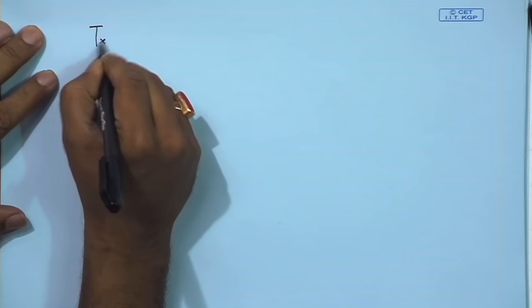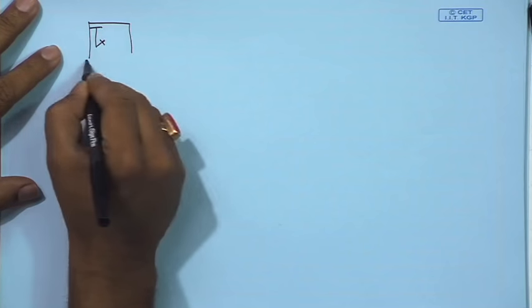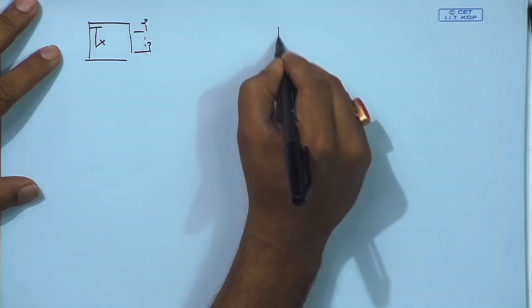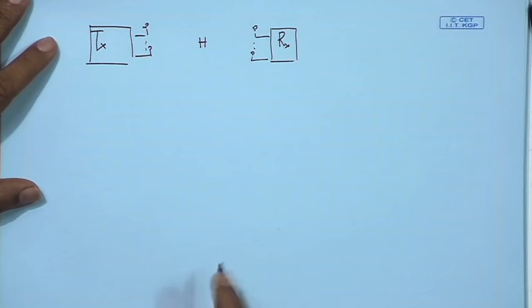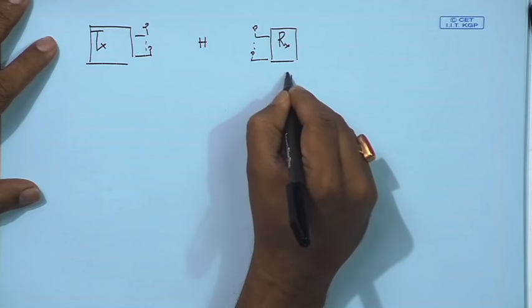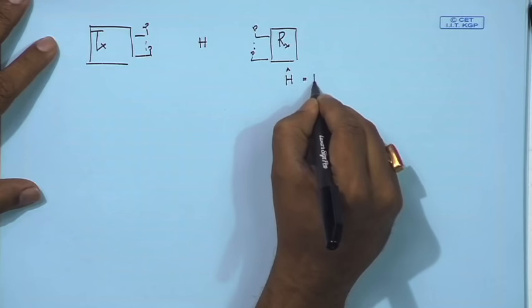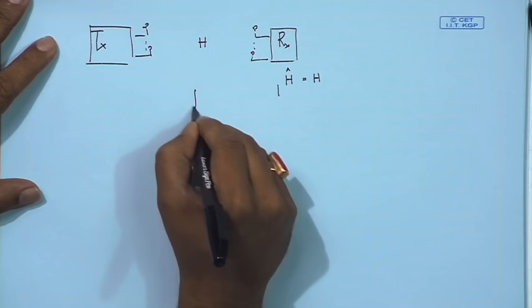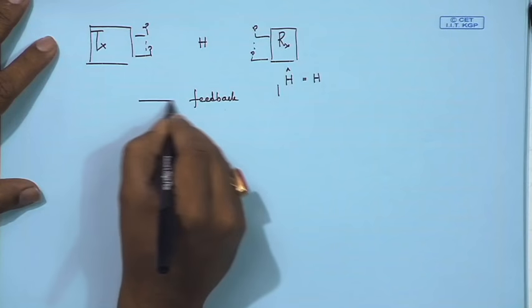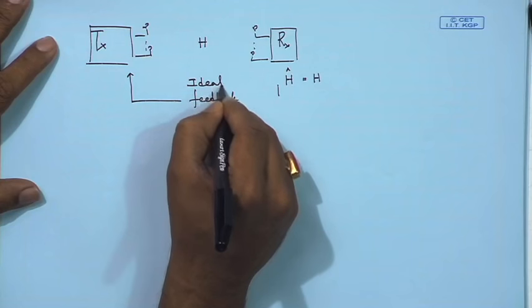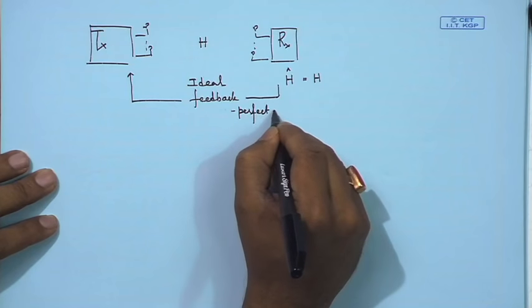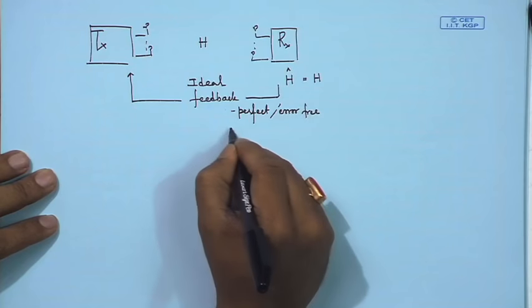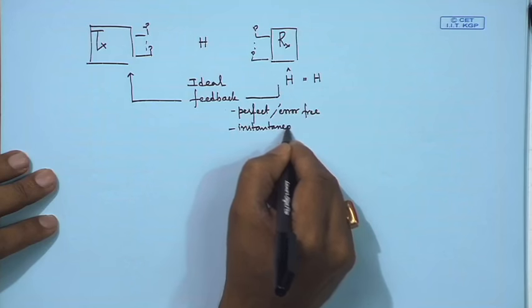In brief, we can draw a transmitter block and a receiver block in general, with a channel in between. This channel is estimated at the receiver — we usually write it as H-hat, but if ideal we say it is H. This H is fed back through an ideal feedback system, meaning the feedback is perfect — error free and instantaneous — which is never a reality.